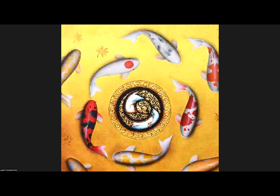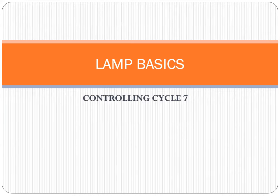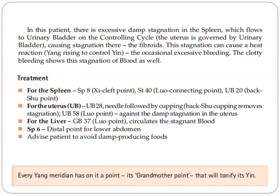Let's call once again Sir Dino for the Controlling Cycle, Part 7. Now we continue with Lamp Basics — the Controlling Cycle, Part 7. On this patient, there is excessive damp stagnation in the spleen, which flows to the urinary bladder on the controlling cycle. The uterus is governed by the urinary bladder, causing stagnation of fibroids.